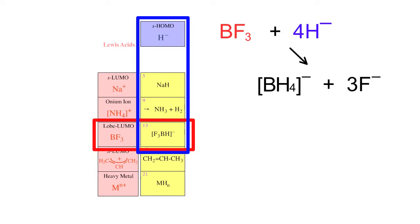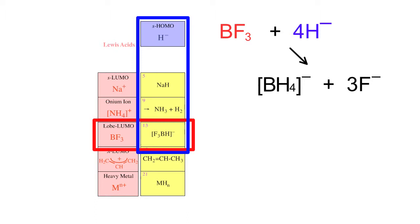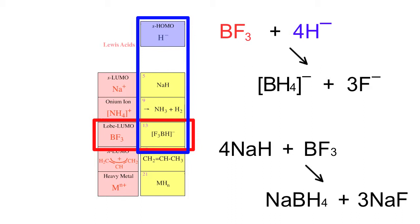Boron trifluoride is a well-known classic Lewis acid, a species with a vacant p orbital, and this reacts with hydride ion to give the tetrahydroborate ion, the main synthesis of sodium borohydride. Sodium hydride is reacted with boron trifluoride to give sodium borohydride and sodium fluoride.